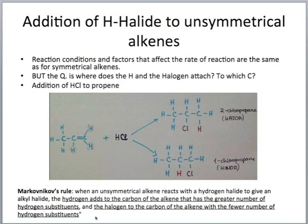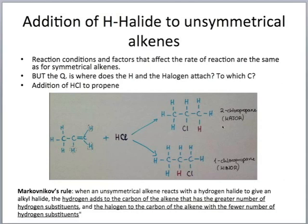According to the rule, the halogen attaches to the carbon of the alkene with the fewer number of hydrogen substituents. So the chlorine attaches to the carbon with only one hydrogen. Therefore the major product is 2-chloropropane. However, there is also a possibility of 1-chloropropane forming as the minor product, but applying Markovnikov's rule tells us what the major product should be.